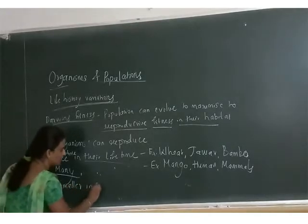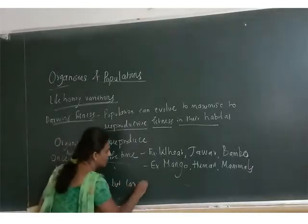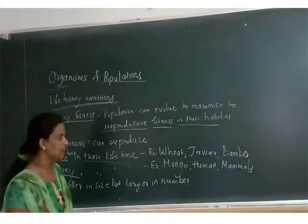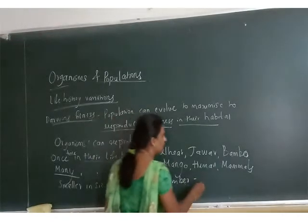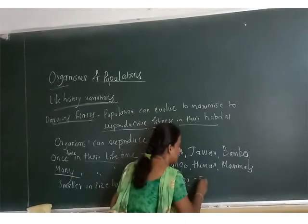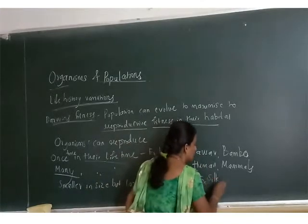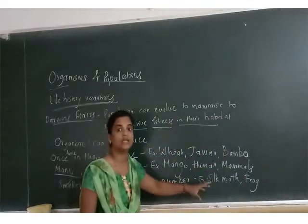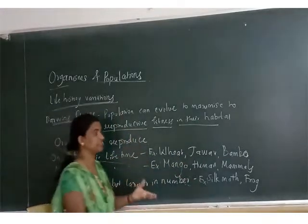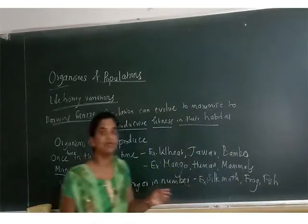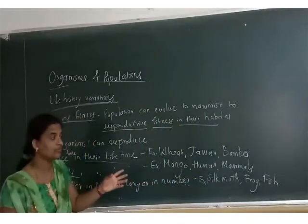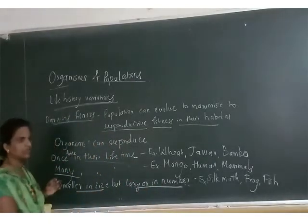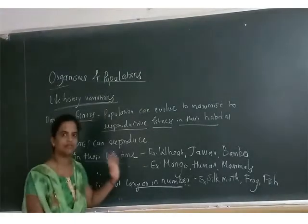Some organisms produce offspring that are smaller in size but larger in number. For example, silk moth and frog can give 300 to 400 eggs at a time. Their number is large, but the size of each offspring is small. That is also a reproductive variation.